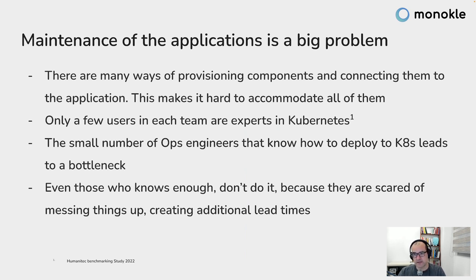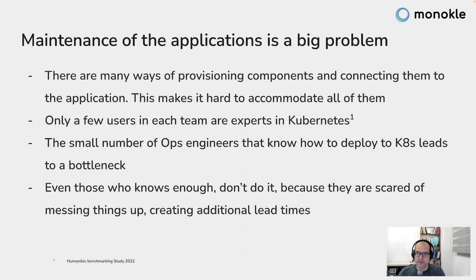There are only a few users in a team that are experts in Kubernetes. This has two problems. The first is that the operations engineers who know how to deploy and create the required configuration become a bottleneck — everyone has to ask the YAML guru to know how to do things. The other problem is that because it's so complex, you can mess it up in so many ways that even people who know what they're doing will be scared of making mistakes, leading to additional lead times and bottlenecks for DevOps or platform engineers.